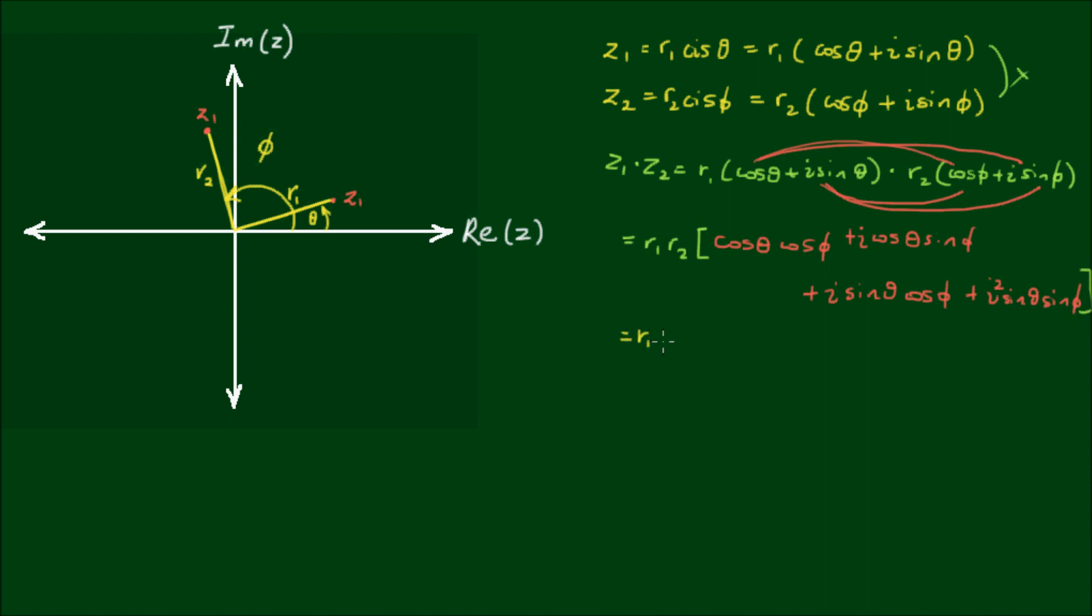Simplifying further, I get r1, r2 outside of cos θ cos φ. Now this i squared becomes a negative 1, so it is minus sin θ sin φ.